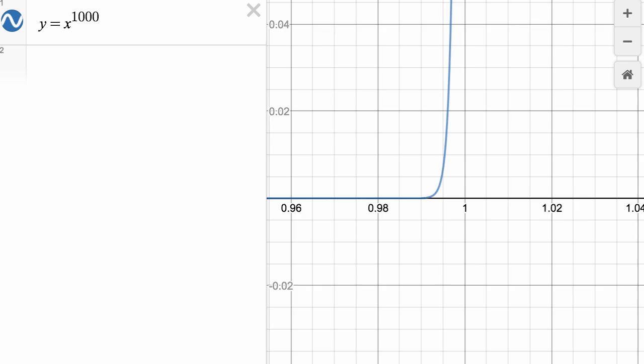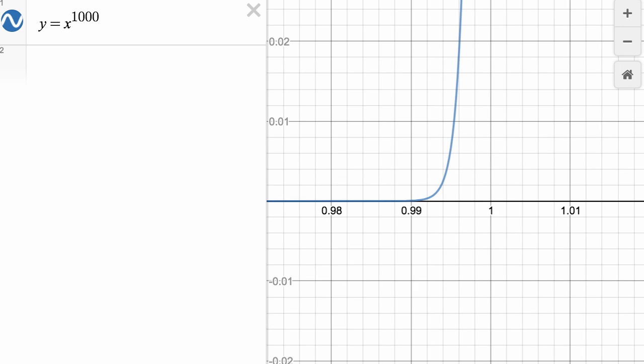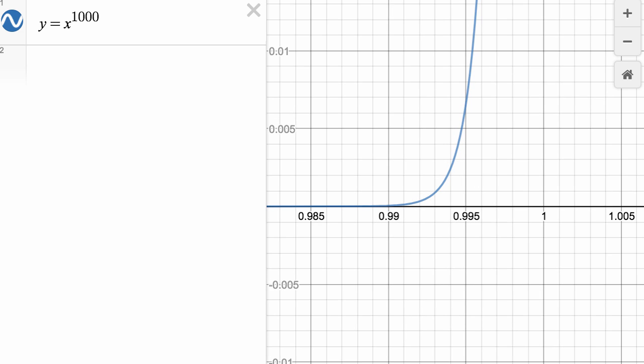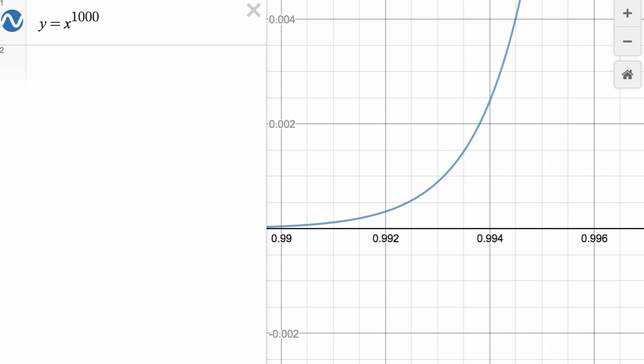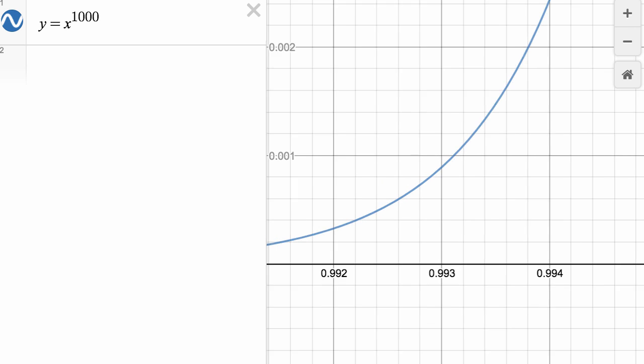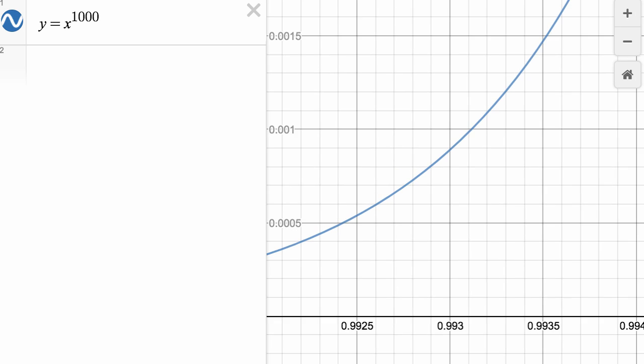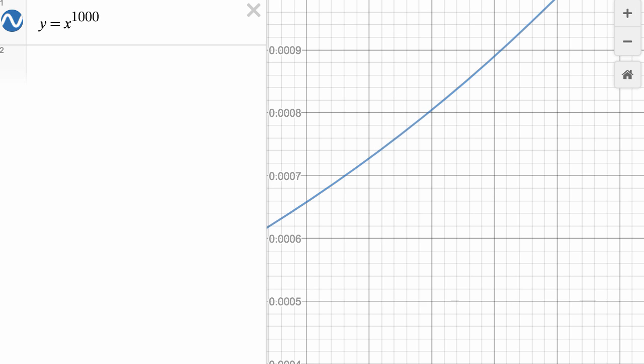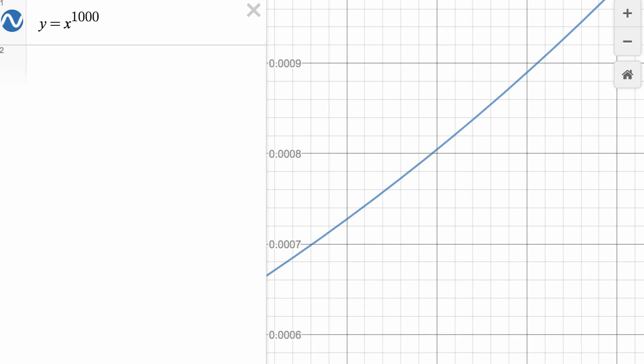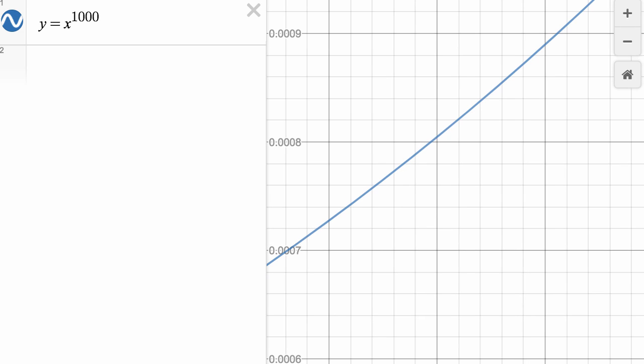And if we zoom in sufficiently, it will actually look like a line. It's hard to believe when you're really zoomed out. And I'm going at the point that really looked like a corner from a distance. But as we zoom in, we see once again, this local linearity. And it's a non-vertical line. And so once again, this is true at any point on this curve, that we are going to be differentiable.